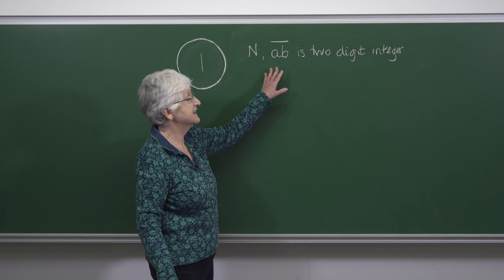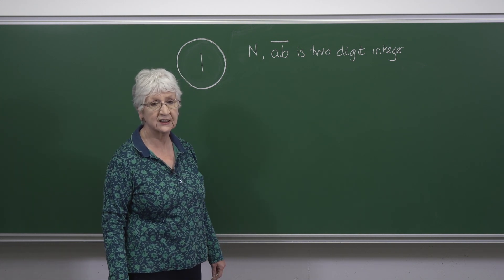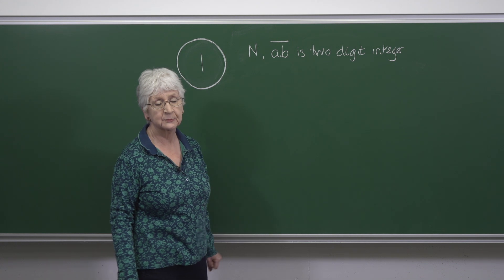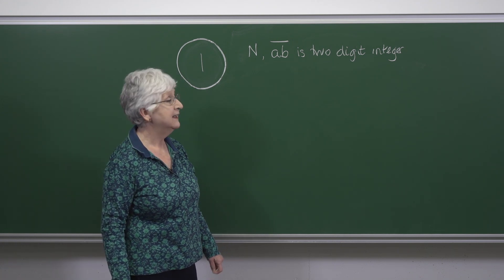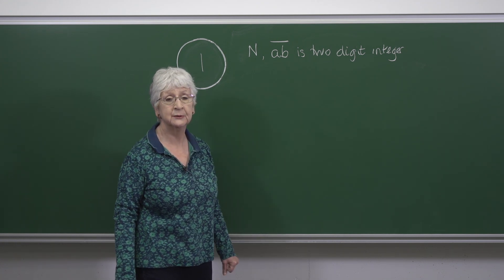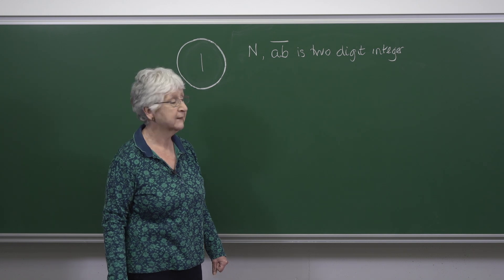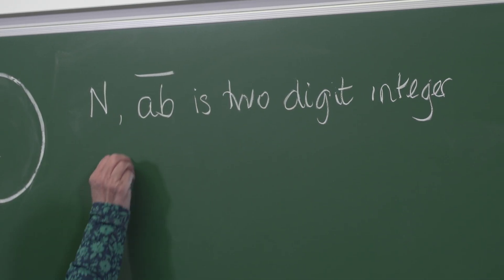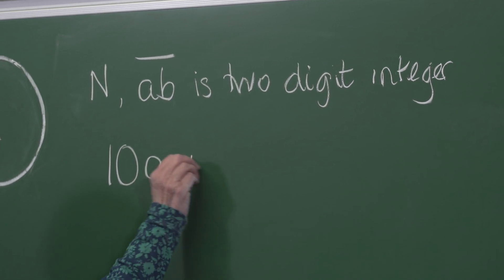We're told that N, that is AB, is a two-digit integer. So that means A is an integer between 1 and 9, and B is an integer between 0 and 9. So the two-digit integer is therefore 10A plus B.